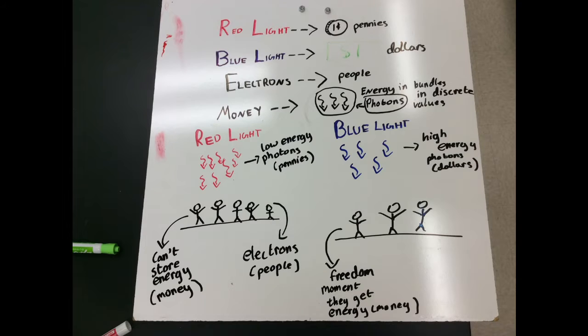Why would this be? The red light works just like the pennies, meaning it has very low energy. And the blue light is like the dollar bill, meaning it has very high energy. The people are the electrons who are free only when they get enough energy, or in the analogy, money.